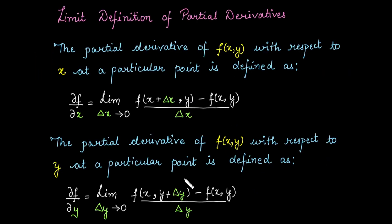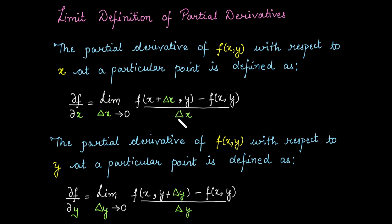Starting with the definition of a partial derivative, suppose we have a function depending upon two variables x and y. The partial derivative of a function with respect to x at a particular point is defined by this expression, which represents the change in the function by a small amount of delta x while y is constant.